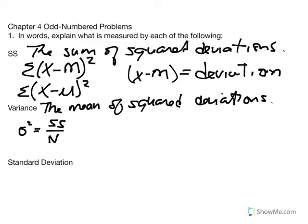If it's a sample, things are slightly different — sample variance is SS divided by N minus 1. The N minus 1 is simply a way of making this statistic unbiased, bringing it closer to what the actual variance would look like if we had access to population data.